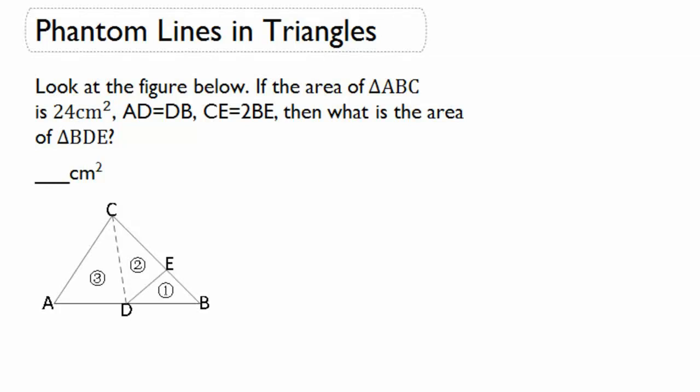Now let's talk about how to use phantom lines in triangles. Look at the figure below. If the area of triangle ABC is 24 centimeters squared, AD equals DB, and CE equals 2BE, then what is the area of triangle BDE?